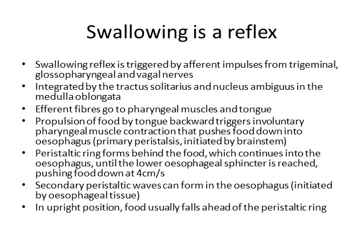We have this ring of contracted muscle behind the food, and as this ring moves forward, it pushes the food down, keeping this peristaltic ring going down and down until it hits the lower esophageal sphincter. The speed at which it can push food down is about 4 cm per second, although in an upright position, through the power of gravity, food will usually fall ahead of that peristaltic ring.